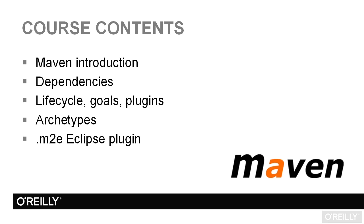From there we're going to expand and you'll learn about dependency management and dependencies within Maven. We'll move on to discuss the lifecycle, the goals, the plugins — this is really how Maven performs its different actions against your project, how it builds an artifact from your simple Java project. Next we'll talk about archetypes, which are really project templates that can help us generate projects more quickly and create reusable projects we can share across our organization. Finally, we'll talk about the M2E Eclipse plugin and its integration within Eclipse that helps us when we're working with Maven.